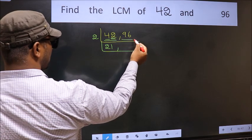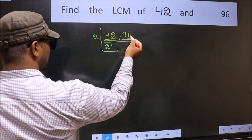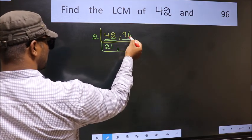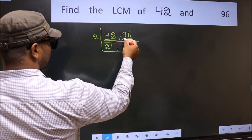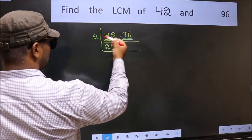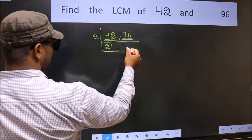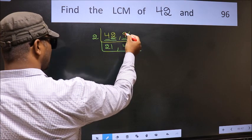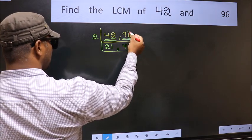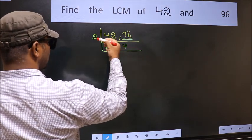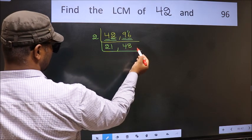Now the other number 96. Last digit 6 — it's even, so this is also divisible by 2. First number 9: a number close to 9 in the 2 table is 2 fours are 8. 9 minus 8 is 1, carried forward — 16. When do we get 16 in the 2 table? 2 eights are 16.